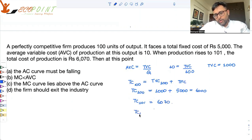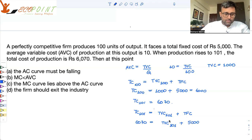Total cost of 101 units is total variable cost of 101 units plus total fixed cost. So total cost of 101 units is 6,070. Total variable cost of 101 units plus total fixed cost. Total fixed cost is 5,000. So can we find out what TVC is?